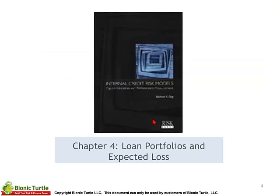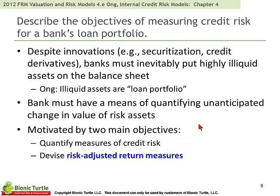Chapter 4 is on Loan Portfolio and Expected Loss. The objective of measuring credit risk is that banks must have a means of quantifying unanticipated change in the value of risk assets. They are motivated by two main objectives: to quantify measures of credit risk and to devise risk-adjusted return measures.